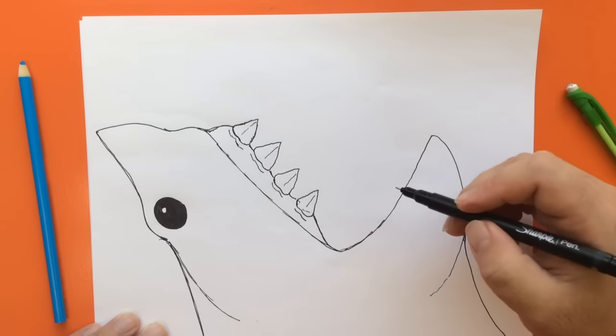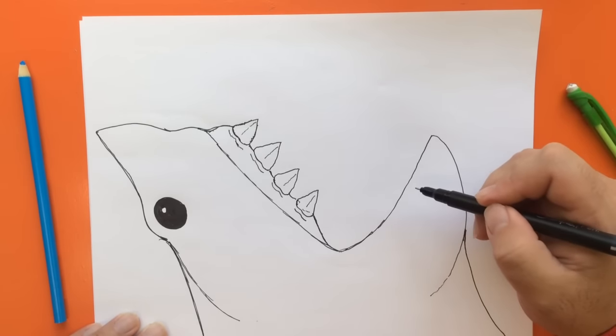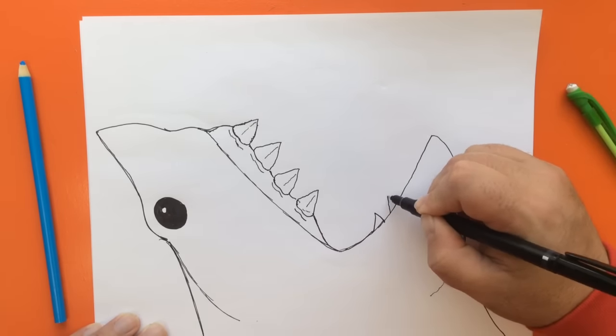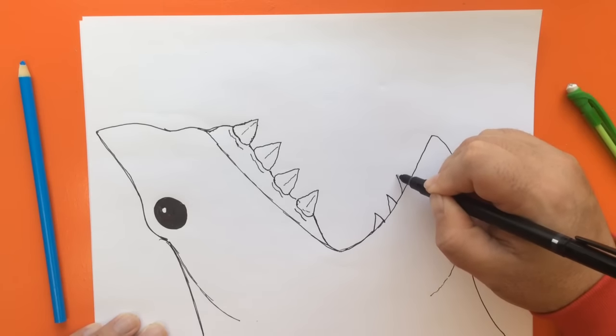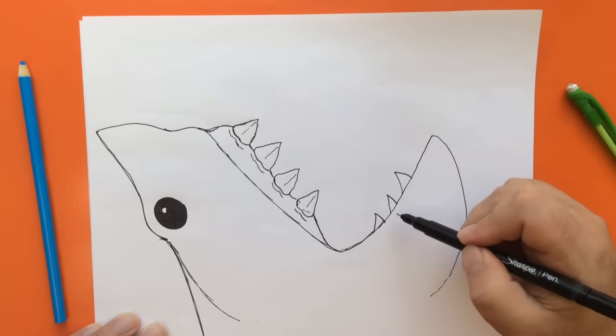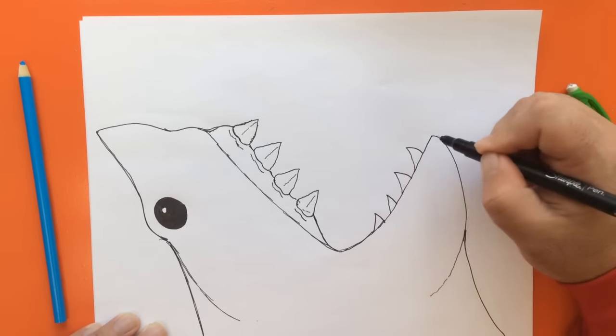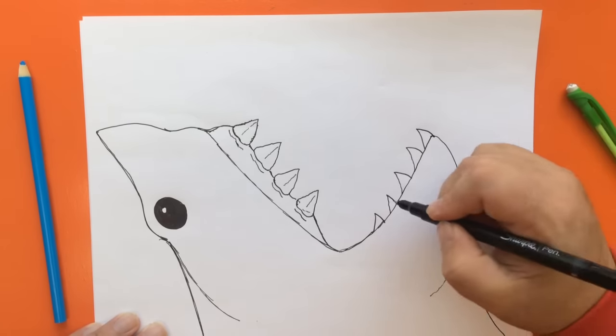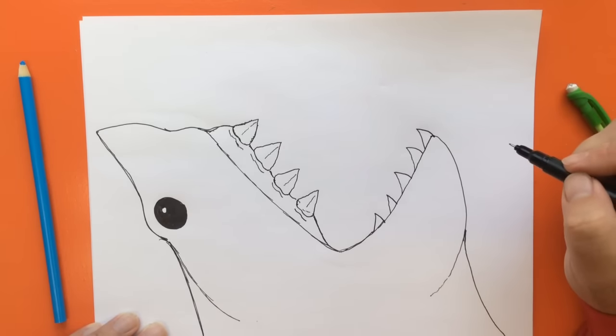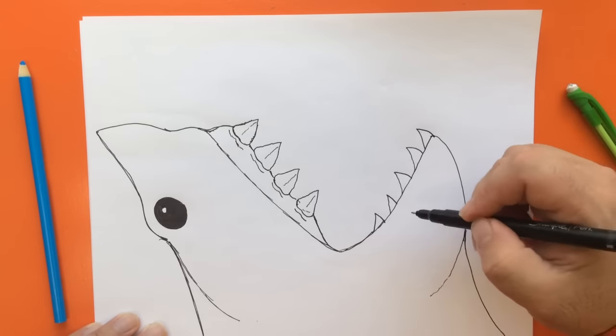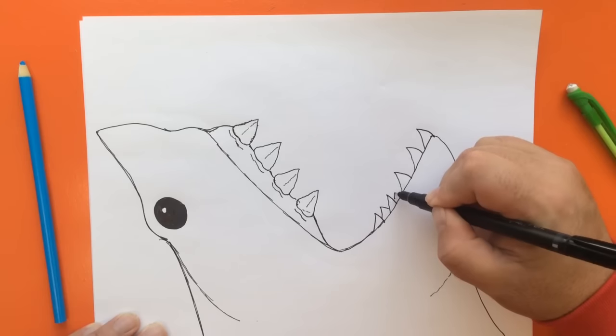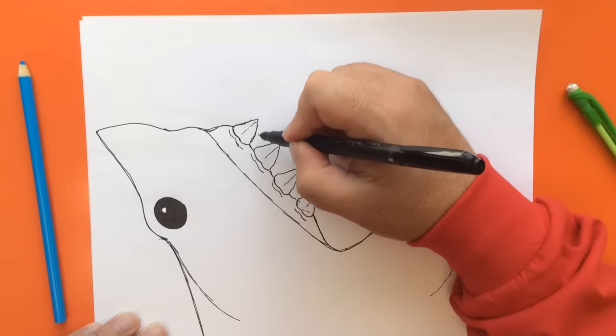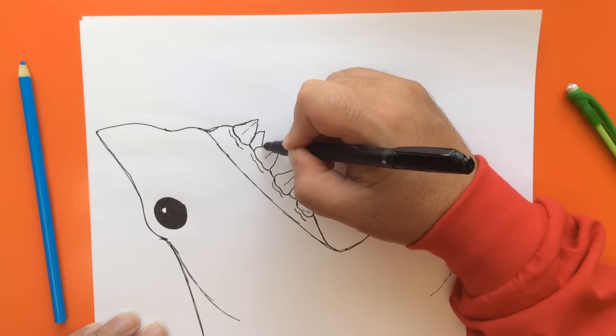Now we're ready to draw the teeth on the lower jaw, which are going to be a little bit narrower and a little bit more curved. Once again, they're going to start smaller at the corner of the mouth and then become larger towards the center. We're going to add the teeth on the other side of the mouth too, so we have a pattern of teeth sticking out.